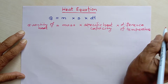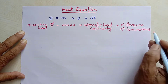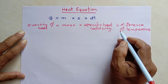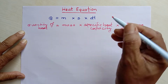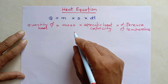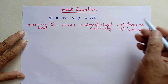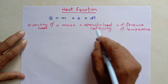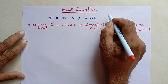Now, one more thing you have to remember: 'difference of temperature' means when we have a final temperature and an initial temperature, and the initial temperature is subtracted from the final temperature, we will get the difference of temperature.